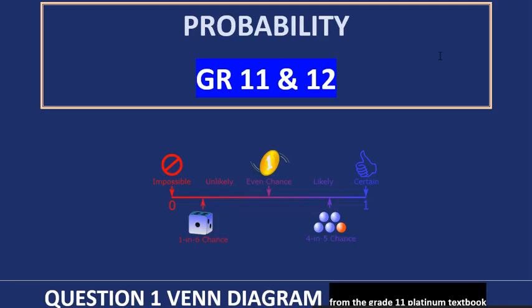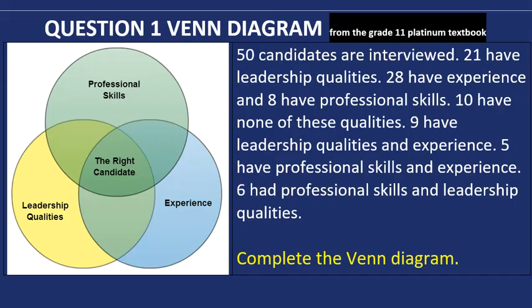Welcome grade 11s and 12s to Probability. Question 1 is a Venn diagram question taken from a platinum textbook.